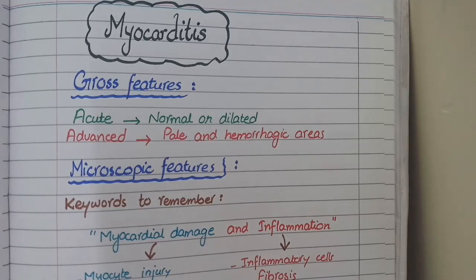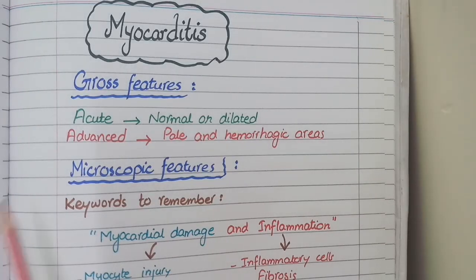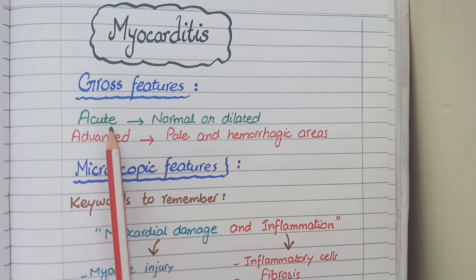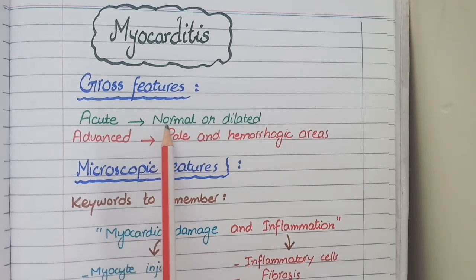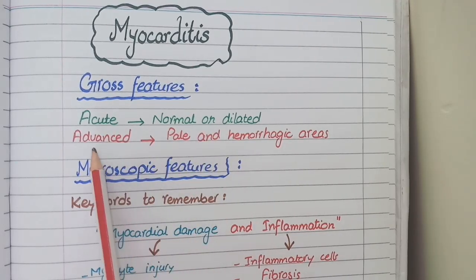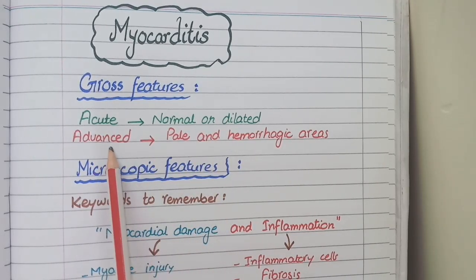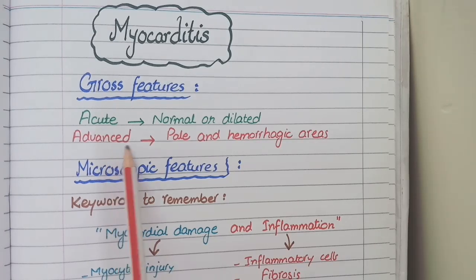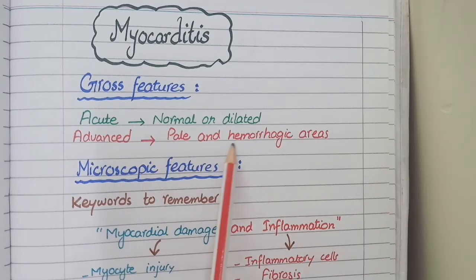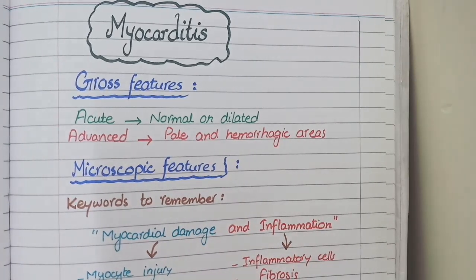Now let's look at the pathological features of myocarditis. In myocarditis, at the acute stage, the heart specimen will be either normal or dilated. In advanced cases, due to damage caused by myocyte injury, the heart will show pale and hemorrhagic areas.